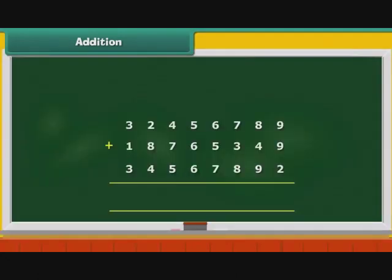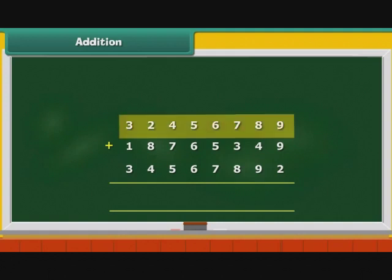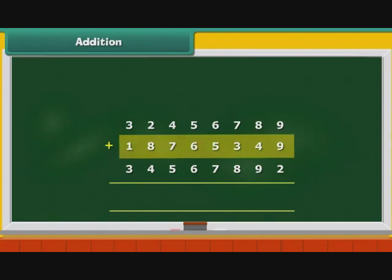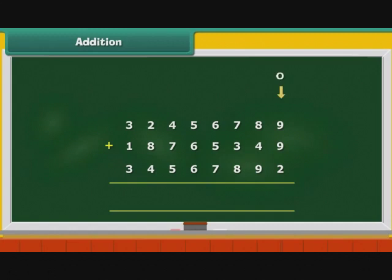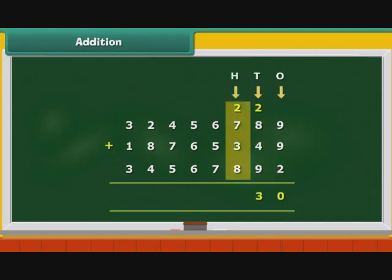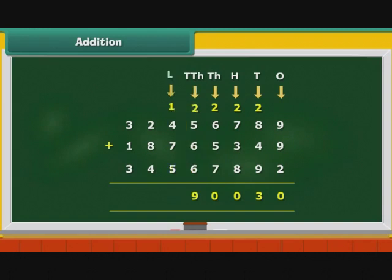Let us now learn to add large numbers. We begin with the addition of three large numbers: 32456789, 18765349, and 34567892. Draw the Indian place value chart and arrange the numbers one below the other. Add the numbers starting with the digits at the ones place, then proceed to tens place, hundreds place and so on. The sum is 85790030.